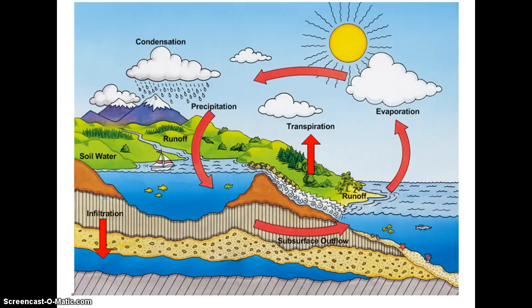Not only do we have energy moving in a unidirectional manner, but we have all types of nutrients that are essential for living organisms cycling constantly between biotic and abiotic factors in any given environment. There are four cycles that your textbook talks about: the water cycle, the carbon cycle, the nitrogen cycle, and the phosphorus cycle — four really important things that living organisms need to live.